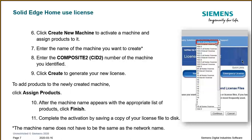To add products to the newly created machine, you click Assign Products. After the machine appears with the appropriate list of products, click Finish. To complete your activation, you save a copy of the license to your disk — you can save it on the desktop or in a specific directory that can be accessed later.